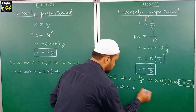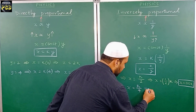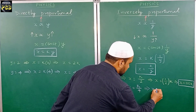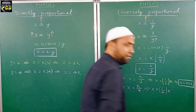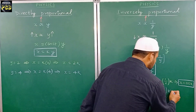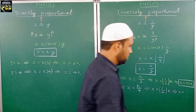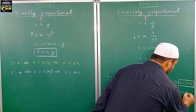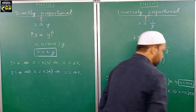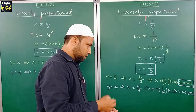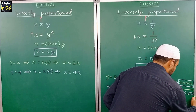Now I increase the value of y to 4. The value of x becomes equal to k upon 4. This can be written as x equals 1 upon 4 multiplied by k. Here, 1 upon 4 is nothing but 0.25, so x is equal to 0.25k. I box this final expression for better visibility.